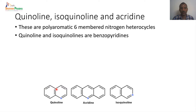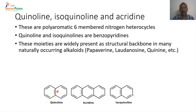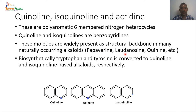Quinoline and Isoquinoline structures each have an aromatic benzene ring and a pyridine ring, so they are called benzopyridines. These moieties are widely present in many natural products — naturally occurring alkaloids like papaverine, laudanosine, and quinine. In biosynthesis, Quinoline is synthesized from tryptophan as the starting material, and Isoquinoline is synthesized from tyrosine.